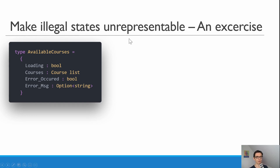So in here we have a couple of fields. It's a record called available courses and it has a property called loading which is a boolean — either true or false — and then we have a list of courses, where course is a specific type returned from the server. Then we have a property called error_occurred which is also a boolean, and we have error_message which is an option of a string. So if we have an error we have some error message, and if we don't we have a none.